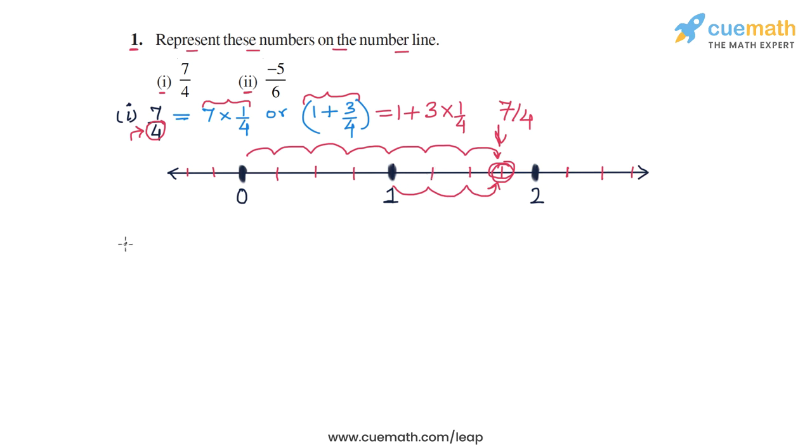Now similarly, let's do part 2. In part 2, the number that we have to represent is minus 5 by 6, and we can interpret this as minus of 5 into 1 by 6. So what we will do is we will make 5 jumps of 1 by 6, but in the left direction, to the left of 0. So that's how we will plot this number.